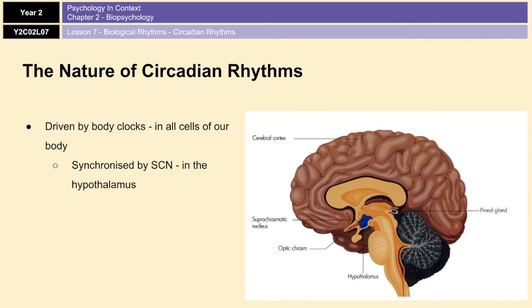Now, all of our circadian rhythms are driven by body clocks. Body clocks are found in all of the cells of the body and are synchronized by what's known as the master circadian pacemaker. And that's known as the SCN, which stands for the suprachiasmatic nuclei, which is found in the hypothalamus. You can see it on the image right there, suprachiasmatic nucleus or nuclei, which is sat there where the hypothalamus is.